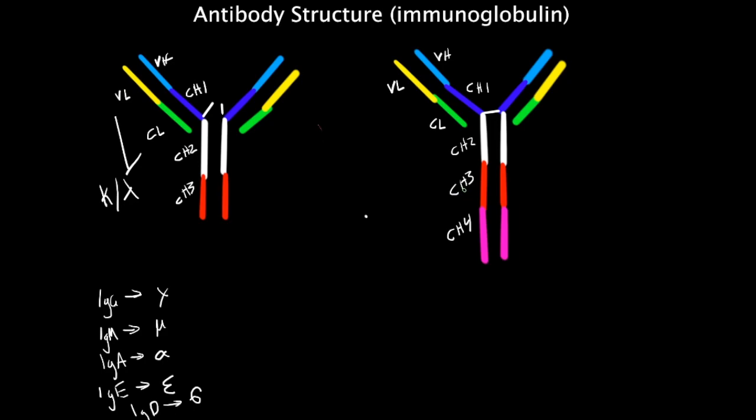Then there's also proline-rich amino acid sequences between the constant 1 and constant 2 domains that form a flexible hinge in this section right here. So this is a hinge, and we'll notice here there's no hinge here, which I'll talk about in a second. So this is your hinge, which is formed by proline-rich amino acid sequence.